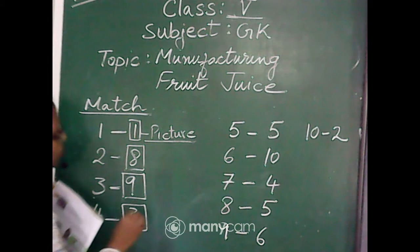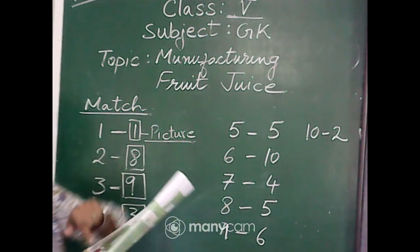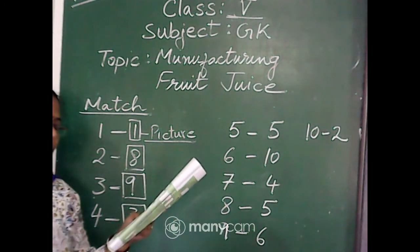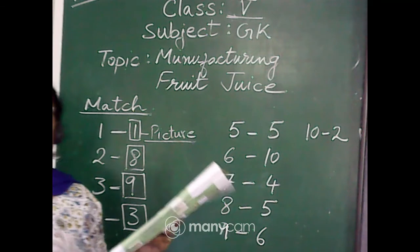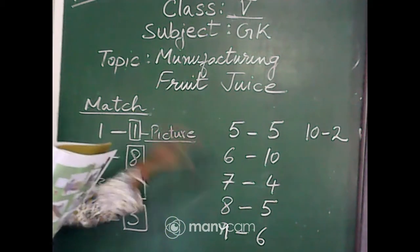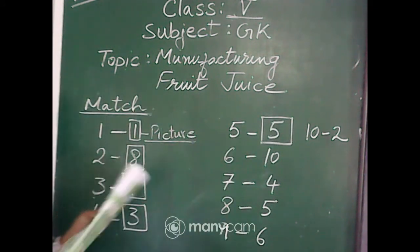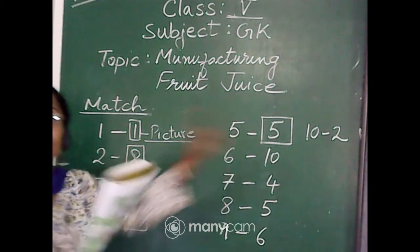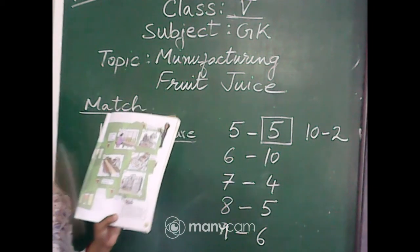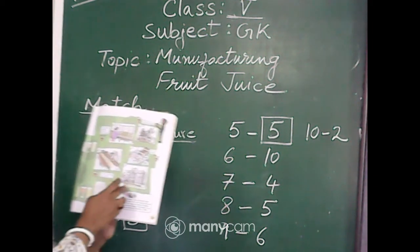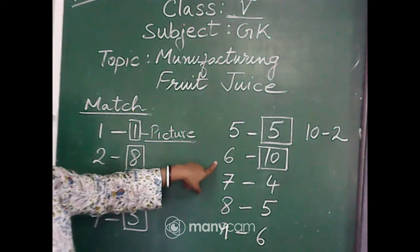Next comes number 5, and number 5 is picture number 5 itself. The bottles and caps are boiled at least 10 minutes to sterilize them. That means the hygiene matter is also taken care of very nicely. Next comes number 6, and picture number 10 is the 6th step where we can see that the pulp is filtered. After cutting and slicing them, the pulp is filtered in this machine.